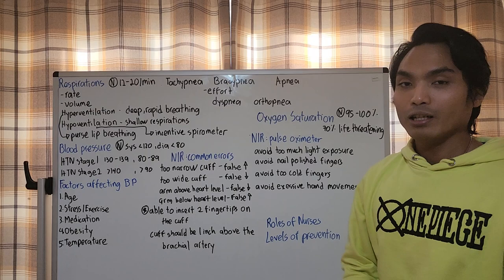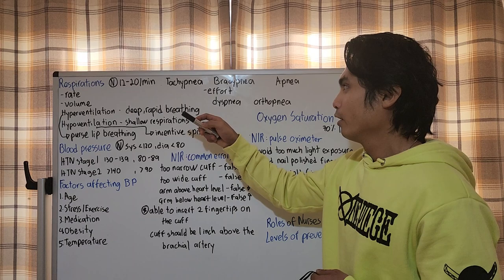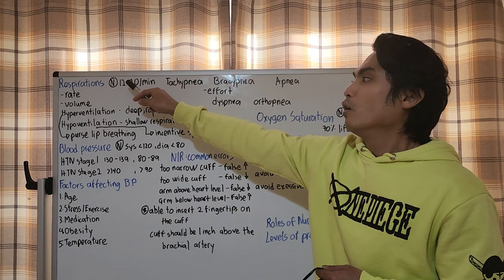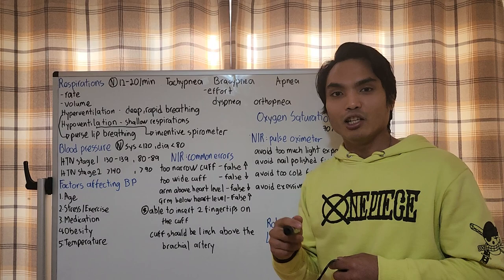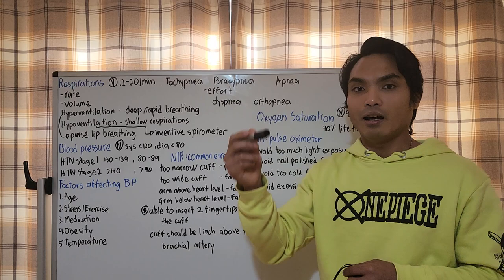Let's go to respiration. Normal volume is 12 to 20 if you are an adult. If increased, more than 20, the term is tachypnea. Lower than 12 is bradypnea. Apnea is the cessation of breathing, zero breathing, like in cardiac arrest.